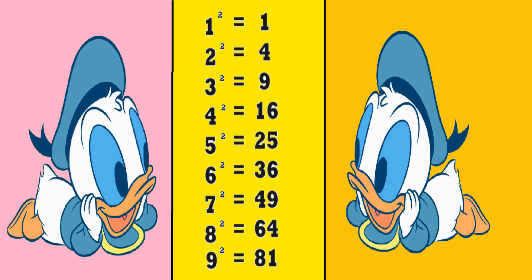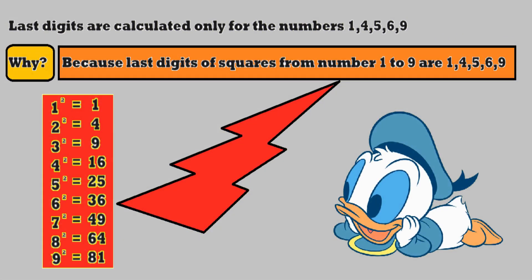This is the square of one-digit numbers from 1 to 9. The last digit of the square root of perfect squares is calculated using the numbers 1, 4, 5, 6, and 9 — because the last digit of the square of all one-digit numbers ends with 1, 4, 5, 6, or 9.